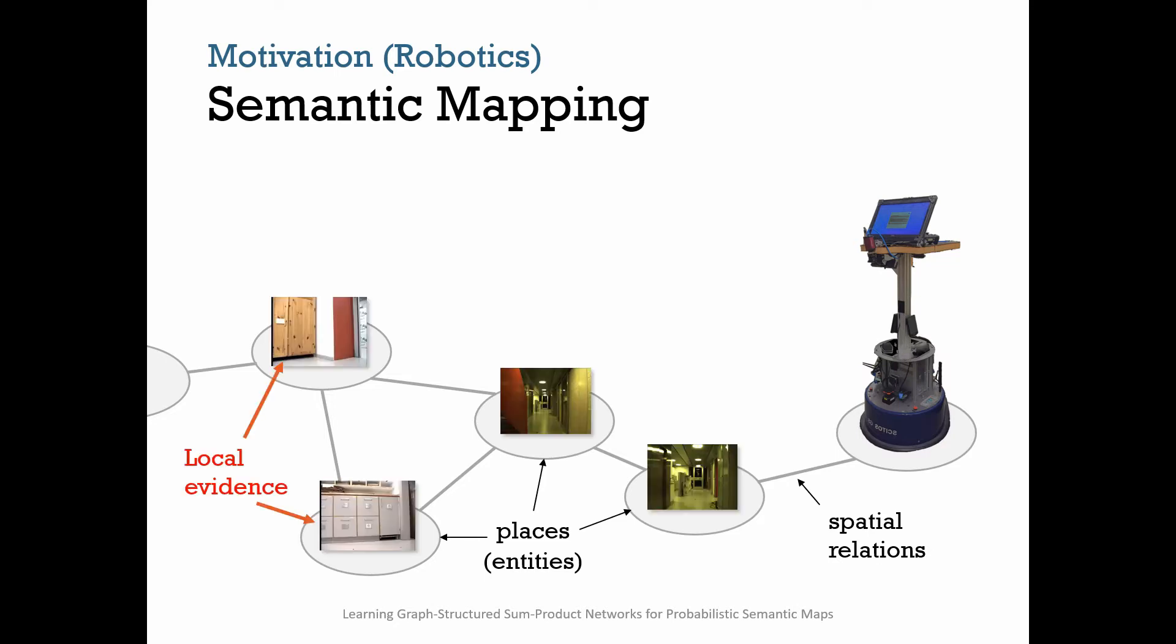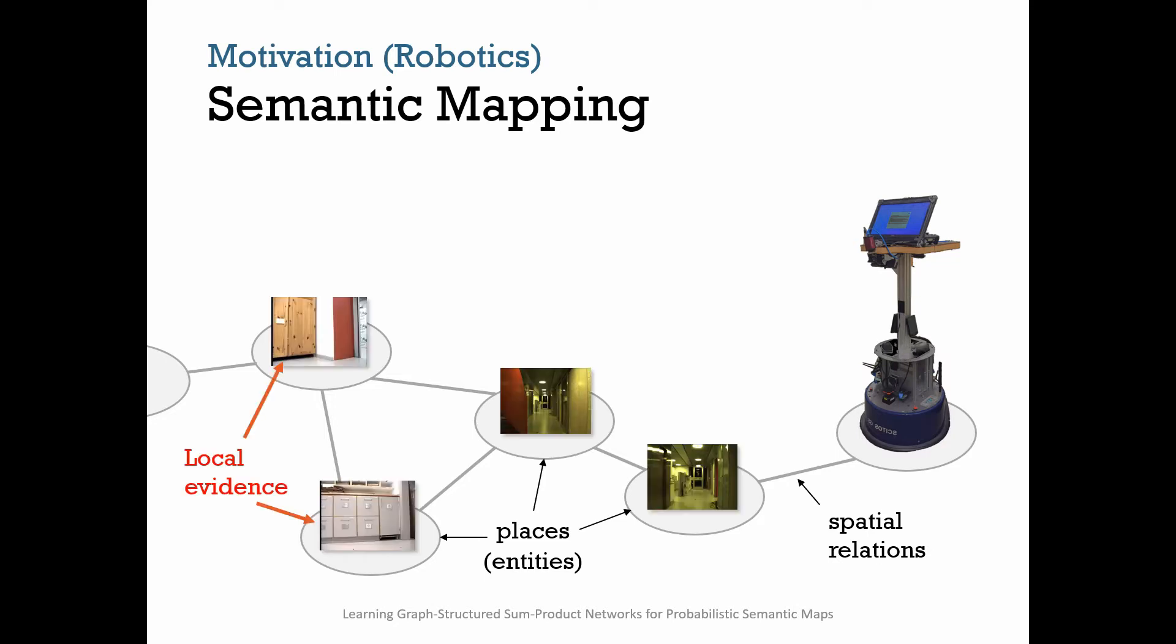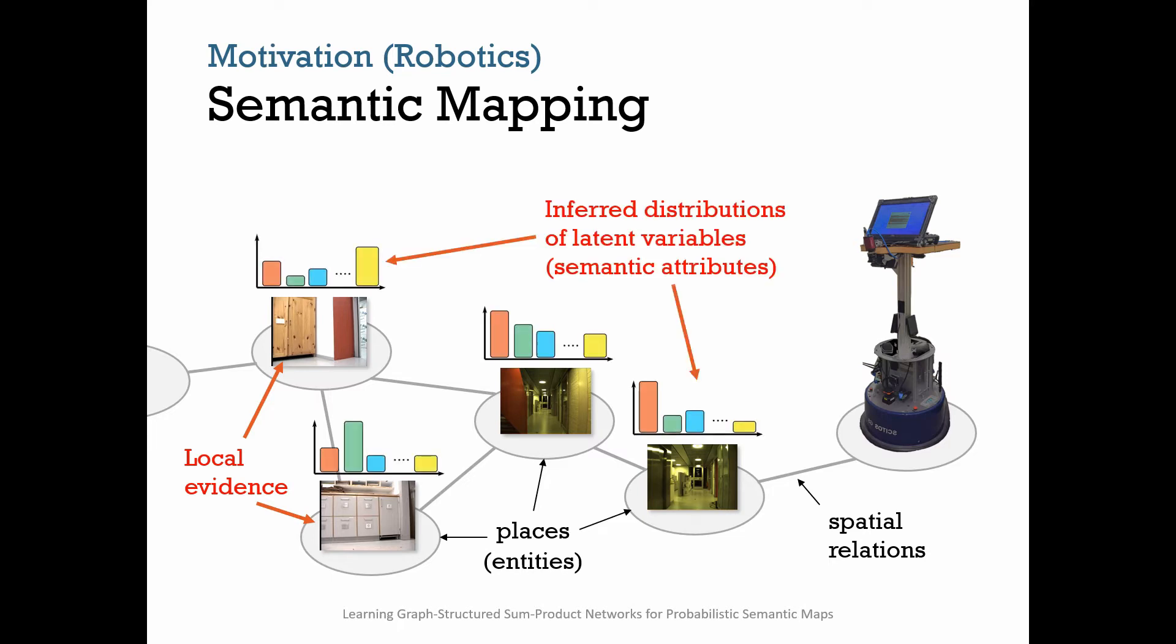The robot collects local evidence about these entities based on its perception in order to infer distributions of latent variables of semantic attributes, such as place category. This process is called semantic mapping.